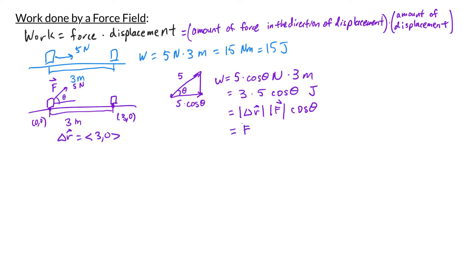In fact, it's the dot product of the force with delta r. So if your force is constant and your motion is in a straight line, then you can calculate work as the force vector dot the displacement vector.